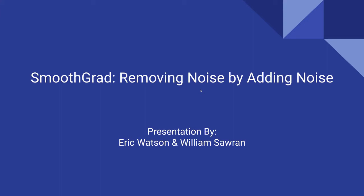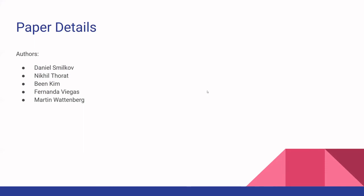Me and William Saron were doing a paper for Explainable AI called SmoothGrad. The paper has five authors: Daniel, Nikhil, Bean, Fernanda, and Martin. It was published in the International Conference for Machine Learning for the 2017 workshop on visualization for deep learning. The authors have over 553 citations for their paper.